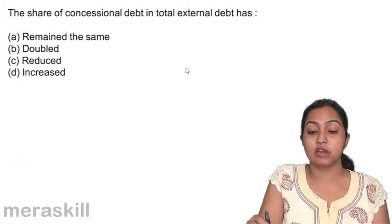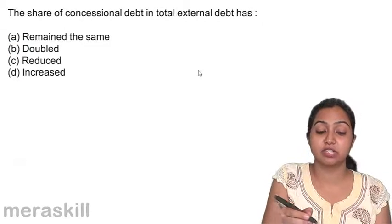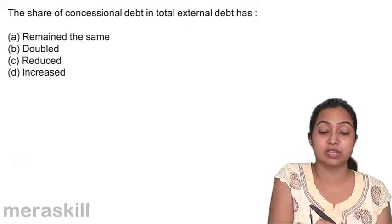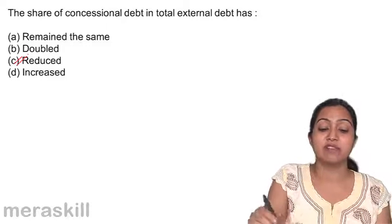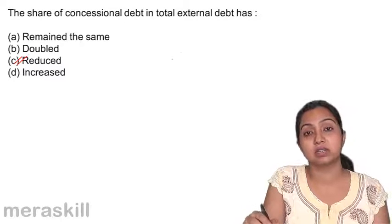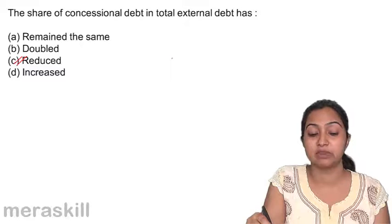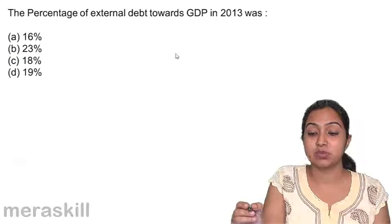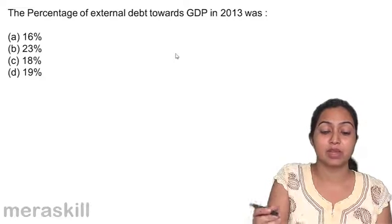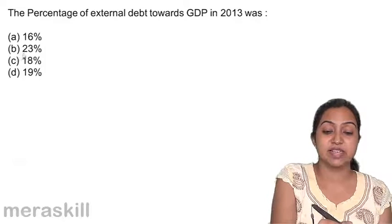The share of concessional debt in total external debt has reduced over the years. Earlier, nearly 25% of the debt was concessional; now only 10.5% is concessional. The percentage of external debt towards GDP in 2013 was 23%.